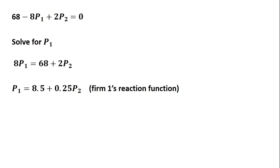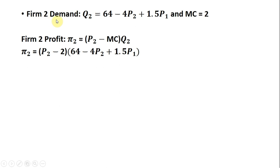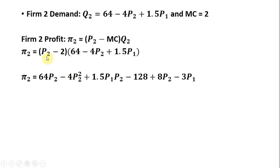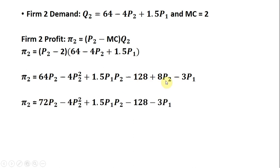We're going to do essentially the same thing for firm two. Recalling firm two's demand equation and marginal cost, we'll set up firm two's profit function — profit per unit times the number of units. Making those substitutions, we're going to simplify by multiplying P subscript two through what's in parentheses, and then multiplying through this minus two. Doing that and being mindful of the signs, we get this result. I'm going to collect these P subscript two terms.